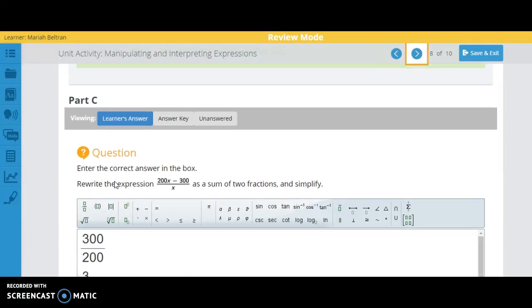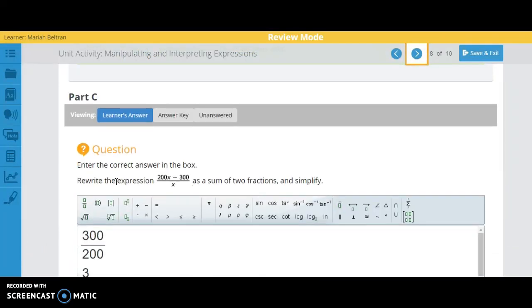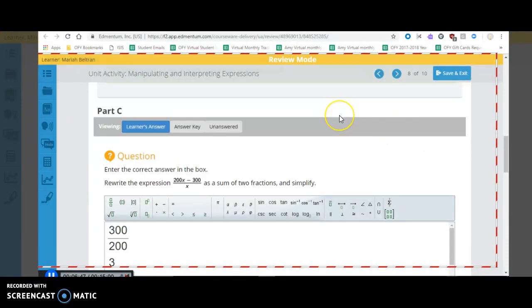All right. Part B is perfect. Good job. Let's go down here to part C. Rewrite the expression as the sum of two fractions. So, I could do, here's an example. Say I wanted to do A plus 3B over 7. I can rewrite that as the sum of two things, each with a denominator of 7, and we would just separate this. It would be A plus 3B.